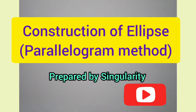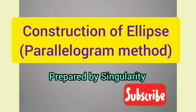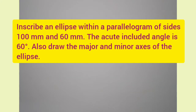Hi all. In this video we are going to draw an ellipse using the parallelogram method. The question is: inscribe an ellipse within a parallelogram of sides 100 mm and 60 mm. The acute included angle is 60 degrees. Also draw the major and minor axis of the ellipse.